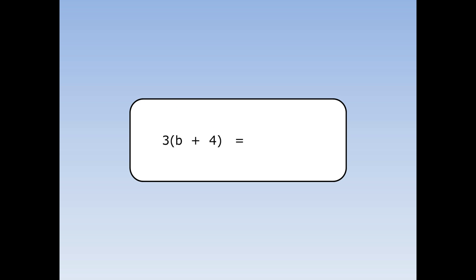We're going to multiply out 3 bracket b plus 4. The 3 at the front multiplies both things inside. 3 times b is 3b. 3 times 4 is 12. When we multiply out 3 bracket b plus 4, the answer is 3b plus 12.